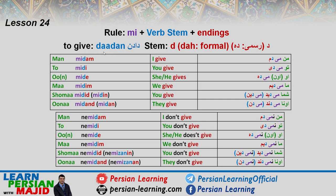Let's see the conjugation of the verb DADAN in present and future simple. The spoken stem is only D, but for formal Persian it is DAH. So spoken is MIDAM, but formal is MIDAHAM. Then MIDI or MIDAHI, and so on. For negative: NEMIDAM, NEMIDI, and so on.